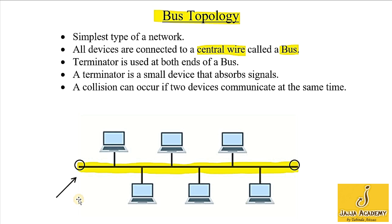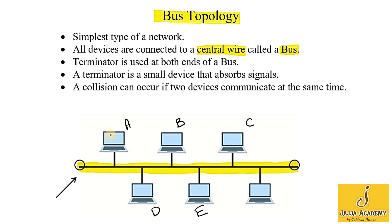Now let's discuss the working of a bus topology. All devices that are connected to a network have unique addresses. Suppose this computer's address is A, its address is B, this is C, D, E, and F.